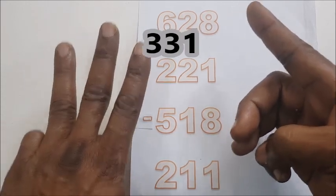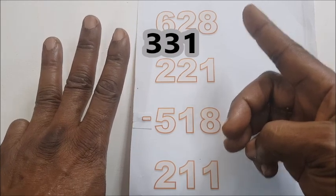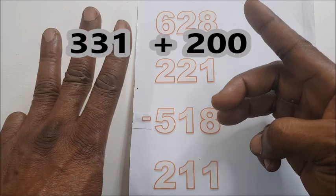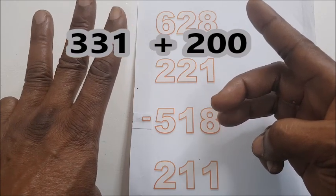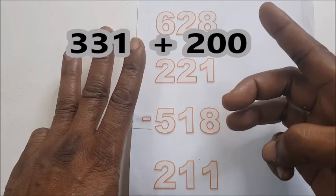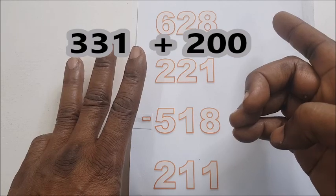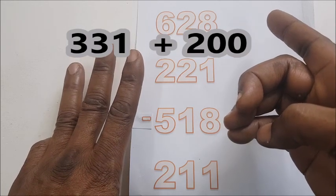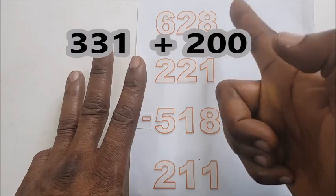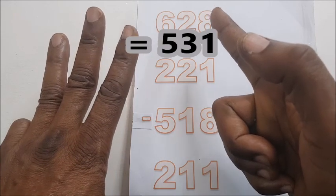So we have three hundred and thirty-one, three hundred and thirty-one, plus two hundred. So plus two hundred, here we have three hundred and thirty-one, two hundred is one, one, one, and then two. So I'll bend the thumb to tell us it's five hundred.